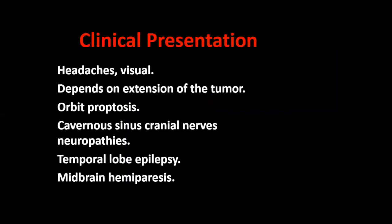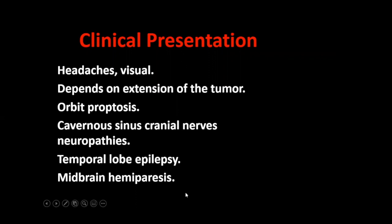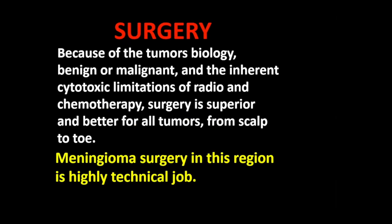How do they present? Most of the time they present with headaches and visual symptoms — these are the main manifestations, which are more prominent in Type 3 sitting on top of the optic canal. The presentation depends on the extension: you may get proptosis, cranial nerve deficits if the cavernous sinus is involved, epilepsy if the temporal lobe is involved, or hemiparesis from midbrain compression. Microsurgery is the main upfront treatment. Because of tumor biology and inherent limitations of radiation and chemotherapy, surgery is superior for all tumors. And as Atul Gawande said, surgery comes first.